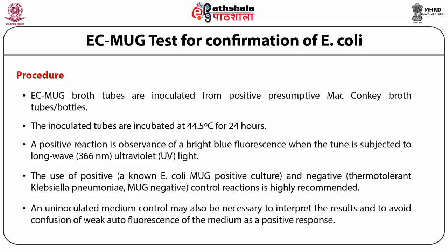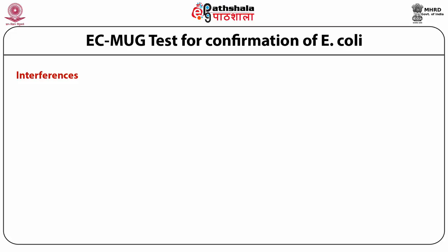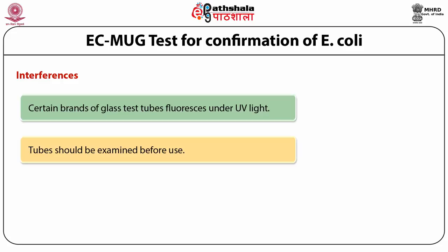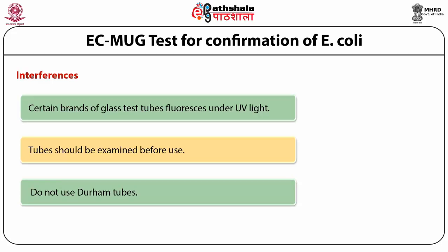Uninoculated medium control may also be necessary to interpret results and avoid confusion with weak autofluorescence of the medium as a positive response. Certain brands of glass test tubes fluoresce under UV light and can interfere with microbiological determination. Durham tubes are not suitable for identifying microbial determination in water samples.